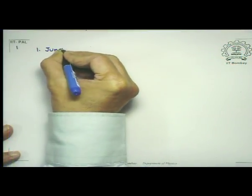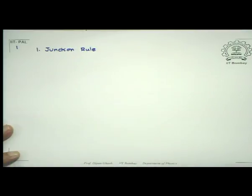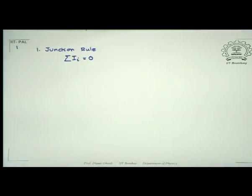We will quickly recall Kirchhoff's laws, which consist of two laws. The first is called the junction rule, where at any junction defined by having at least three conductors joining at that point, the algebraic sum of all the currents arriving there must equal zero. Those arriving are taken as positive and those leaving as negative, or vice versa.